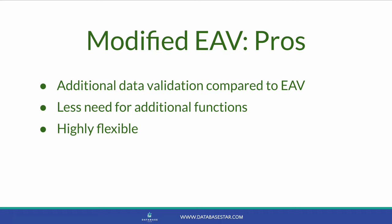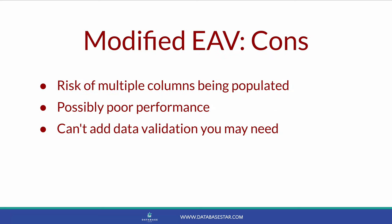The advantages of this approach are additional data validation compared to EAV — dates are valid, numbers are valid, you can sort numbers correctly and add them together. There is also less need to perform additional functions to transform data; you don't need to convert a string value to a date if the date is in a date column. It has the same type of flexibility as EAV, allowing users to customize the data they store. You can enhance this to allow users to select the data type on the user interface — either text, date, or number — which ensures only one column is populated. However, this design has disadvantages: the first is the risk that multiple columns are populated, causing inconsistent data.